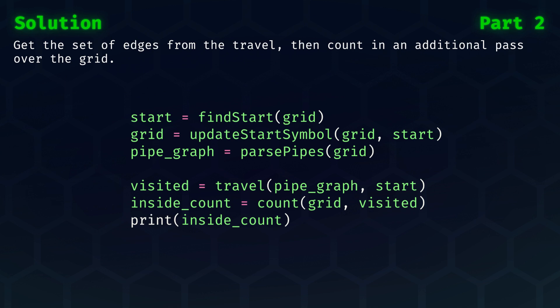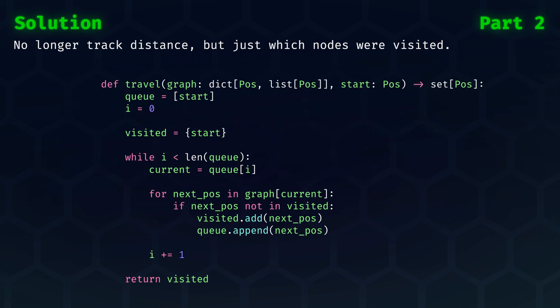This is tracked by the set of visited positions. If we have that set of visited positions, then we can use that to count which fields in the grid are inside of the loop. If we look at our updated travel function, then the key change is that we no longer care about tracking distance at all, so we can remove any logic related to that. Note that the return type has changed as well.